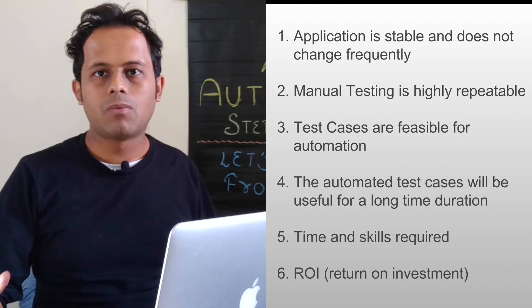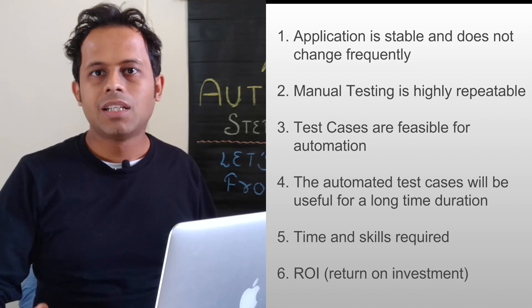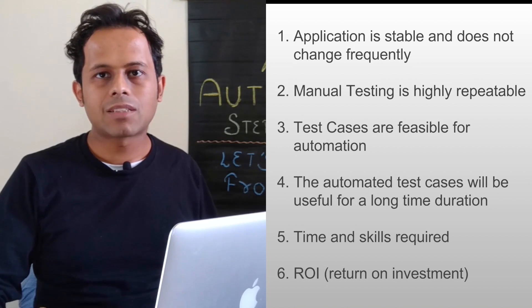For example, I invest x in creating the automation framework and creating the scripts and all the investment that I do is x. Then after automation is done, what I get back should be x plus y. In case I'm getting back only x or x minus y, then probably I should not go for automation.